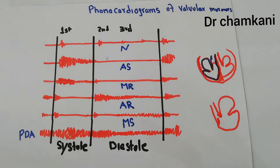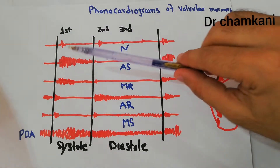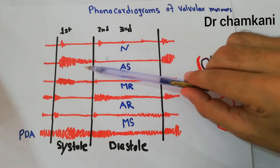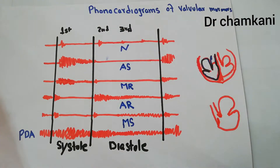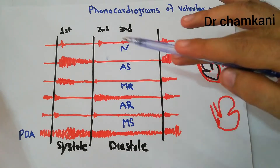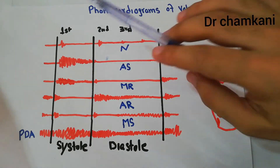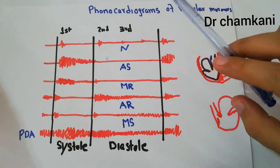The use of the phonocardiogram is that we can not only determine loudness, but we can show different murmurs in an easy way by comparing them on the same graph and comparing their loudness.